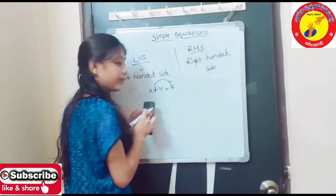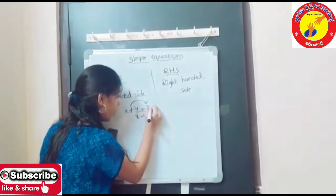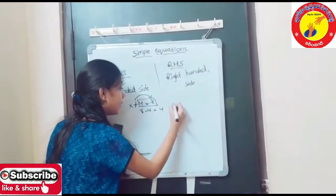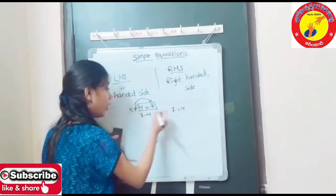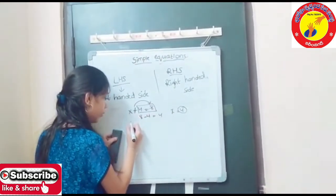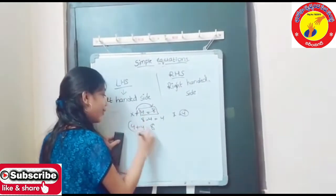Now I am using minus. 8 minus 4 is 4. Our answer is X is equals to 4. Let us check: X is equals to 4, 4 plus 4 is equals to 8. We got the correct answer.